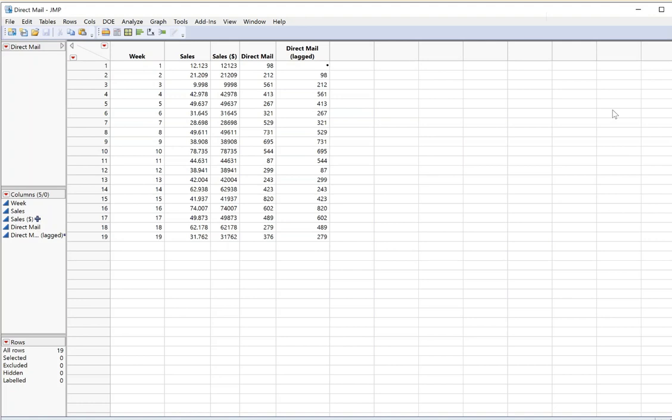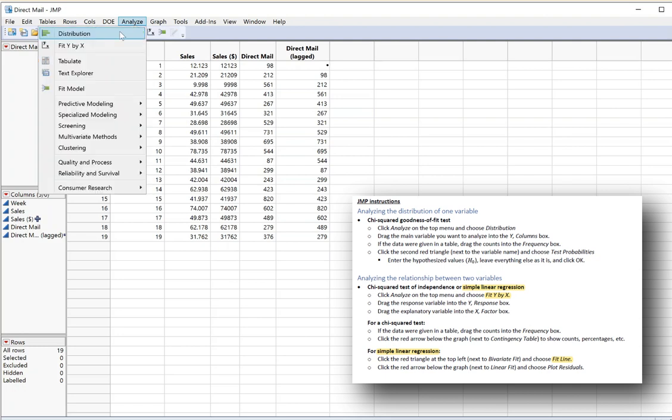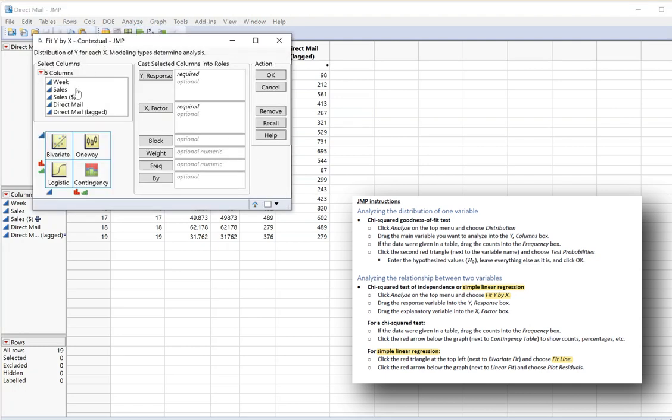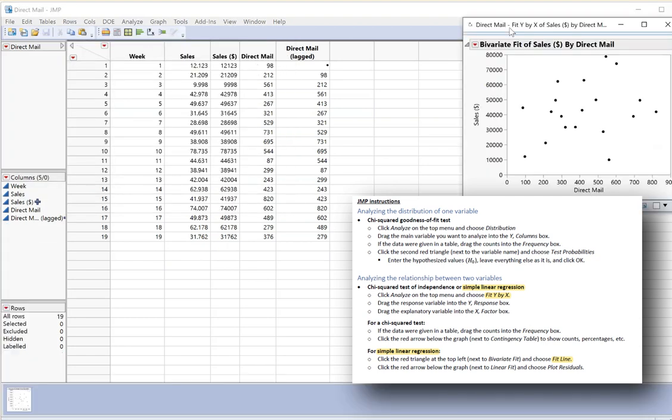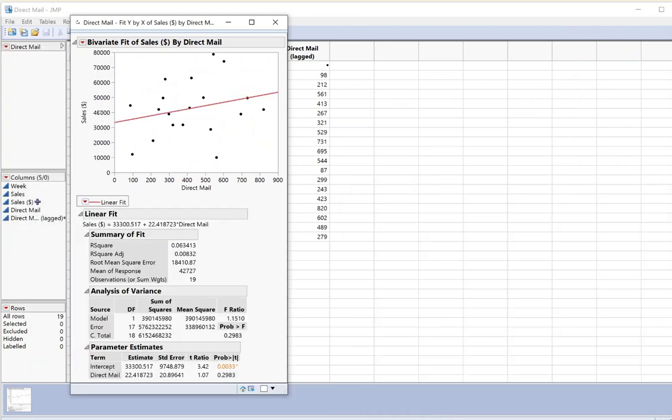So the first thing that we would probably try is just to look at the relationship between direct mail and sales. So I'm going to follow the instructions for simple linear regression. These are on your reference sheet if you need them. Analyze fit y by x. Sales is the outcome that I care about. I'm going to use the version in dollars. Direct mail is the x. And then I'm going to choose fit line. So I don't really see much of a relationship here. This looks like a pretty weak relationship. Only 6% of the variability has been explained. But there's actually a problem with this.